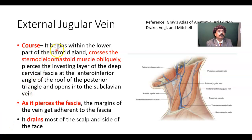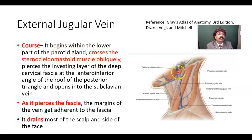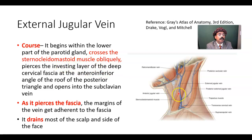What is the course of the external jugular vein? The external jugular vein begins within the lower part of the parotid gland. Here is the location of the parotid gland. It is formed in the lower part of the parotid gland and crosses the sternocleidomastoid muscle obliquely.